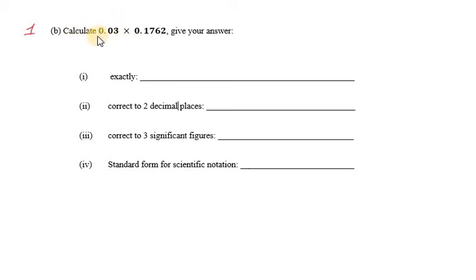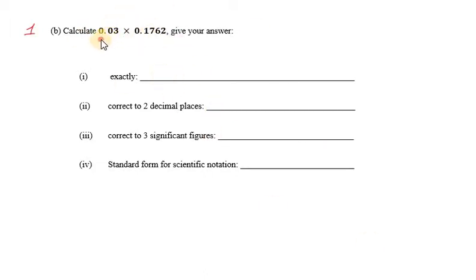We have question 1 part B: 0.03 multiplied by 0.1762. The good thing about it, we can punch this into our calculator and get the exact answer.